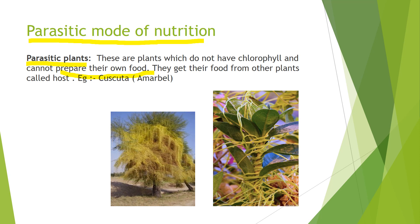Parasites do not have chlorophyll. They are dependent on green plants or other organisms for their food, and these are called host plants. An example of this is Cuscuta, called Amarbele in Hindi, and another common name is yellow dodder. Yellow dodder, Amarbele, and Cuscuta are the same thing.